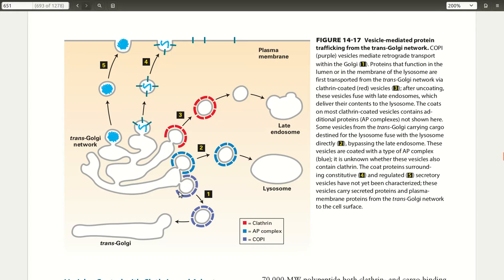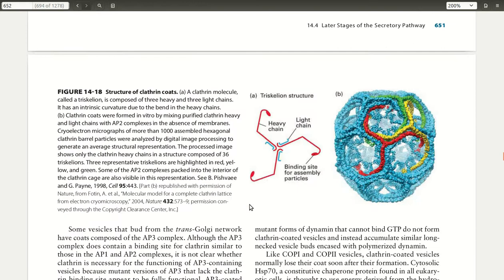The clathrin is this three-legged protein composed of each leg made of a heavy chain in red and a light chain in blue. The intrinsic 3D structure of this fibrous protein network is shown here in figure B.